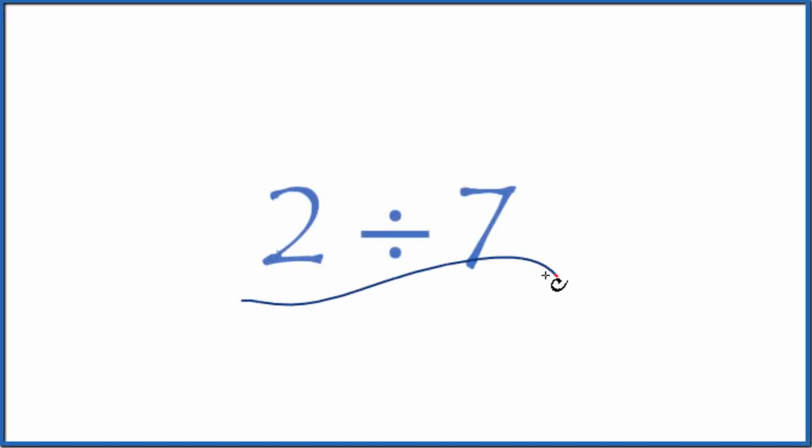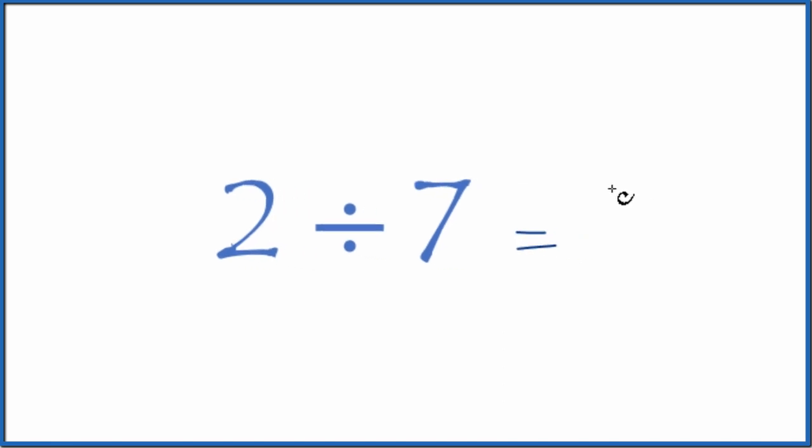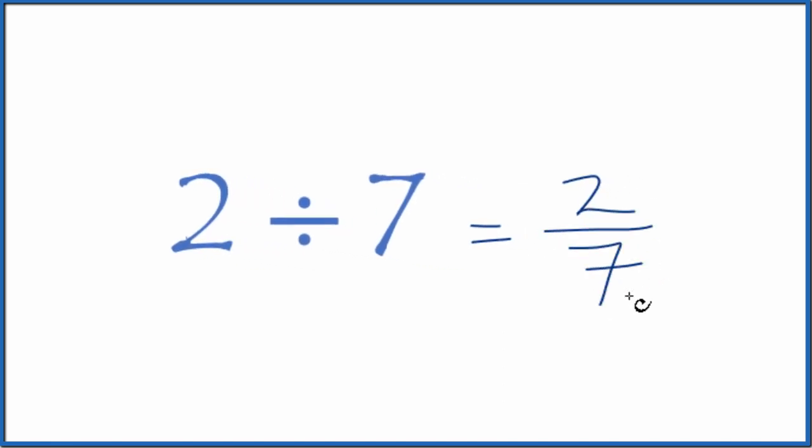Let's divide 2 by 7. The first way I like to think about this is as a fraction, 2 over 7. That's the same thing as 2 divided by 7. So when we have 2 divided by 7, we could call it the fraction 2 sevenths.